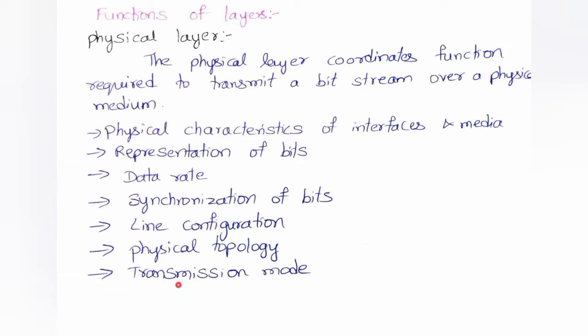Transmission mode refers to the direction of data communication between sender and receiver. The physical layer defines transmission direction in three formats: simplex mode, which is one-way communication; half duplex mode, where two devices can transmit to each other but not at the same time; and full duplex mode, where two devices can send and receive simultaneously.